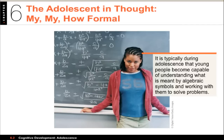Children can begin this phase of formal operations at 11 or 12. Some reach it later, and some may never achieve it. But adolescents who are in the formal operations stage can speculate about possibilities in their minds, test their theories, and do a mental test to see if they're accurate. They can also understand concepts using symbols that represent something else — for instance, you have these enormous algebra equations on the chalkboard behind this person.